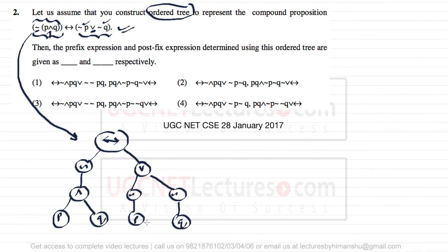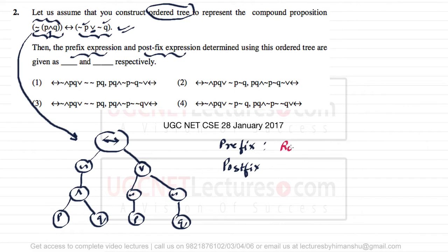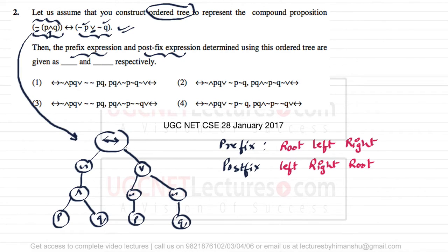Now, given this tree, we have to find the prefix expression and the postfix expression. In a prefix expression, we visit the root first, then print the left subtree, then the right subtree. In a postfix expression, we first visit the left subtree, then the right subtree, and finally we visit the root.